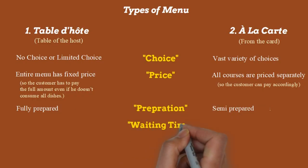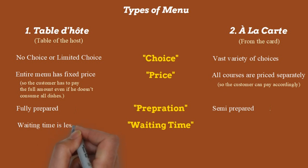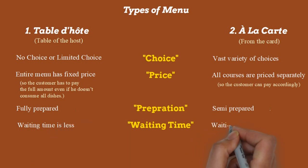Based on the preparation condition, another point of differentiation is waiting time. Since food is in fully prepared form in the table d'hôte menu, the waiting time is very less. Since the food is in semi-prepared form in the à la carte menu, the waiting time is more. So far we have four bases of differentiation: choice, price, preparation of food, and waiting time.